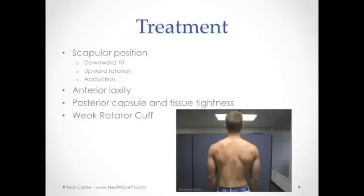Strengthening the rotator cuff to keep the humeral head from riding up into the glenoid will be vital for rehabilitation. Getting the acute inflammation to subside and identifying structural abnormalities will be important to plan the course of rehabilitation. If the fraying of either the rotator cuff or labrum is too extensive, conservative treatment may be unsuccessful, and in that case the best course of action will probably be arthroscopic surgery and debridement. Preventing these pathologies in young asymptomatic athletes is our best treatment. Identifying poor scapular position and control, weak rotator cuffs, posterior shoulder tightness, or anterior laxity in young athletes' careers may reduce the chance of this injury later in their careers.